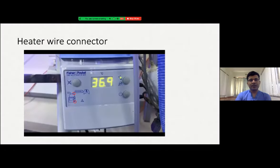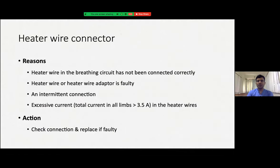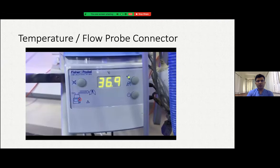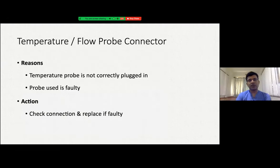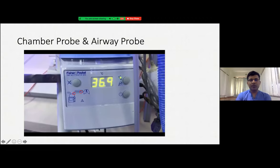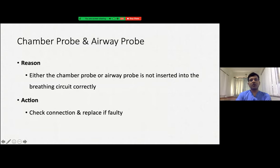The heater wire connector alarm occurs when the heater wire is not connected properly, is faulty, or there is a problem with current flow. Check the connection; if connections are fine and the alarm persists, replace the connector — hand it to the biomedical team for replacement. If there is a problem with the temperature or flow probe connector, this alarm will activate. Check whether it is faulty or improperly connected; if properly connected it means it is faulty and must be replaced. There can also be alarms for the chamber probe and airway probe together, occurring when either is dysfunctional or not properly inserted — replace the temperature sensors.